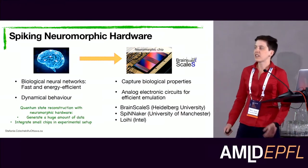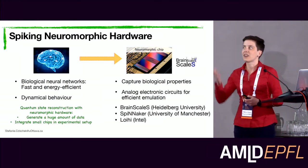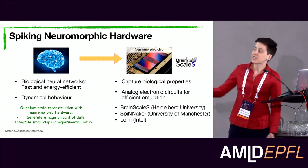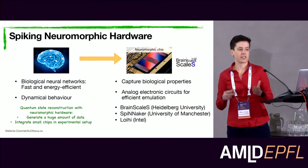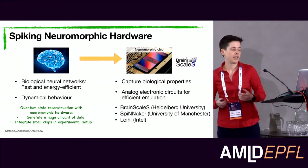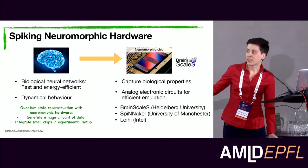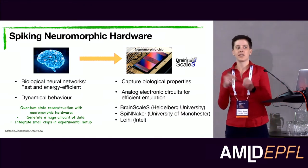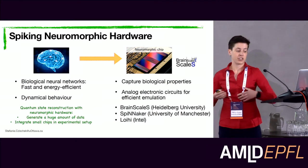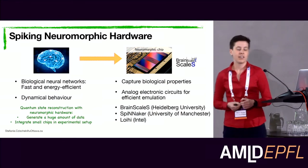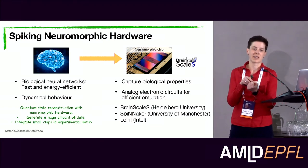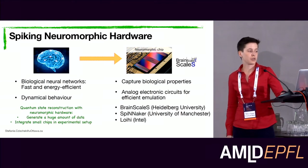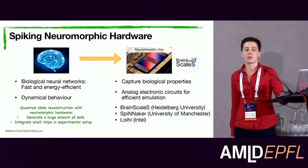So why use neuromorphic hardware for quantum state reconstruction? If we can run neural networks at the speed of biological neural networks — accelerating sampling from restricted Boltzmann machines — we can generate a huge amount of data in a very short time, giving better insight into reconstructed quantum states. Furthermore, these chips are small and energy efficient, suggesting they can be integrated into experimental setups. For example, if we use quantum state reconstruction to benchmark quantum computing devices, it is very helpful to integrate this benchmarking directly into the experimental setup, reducing interaction with the outside world.